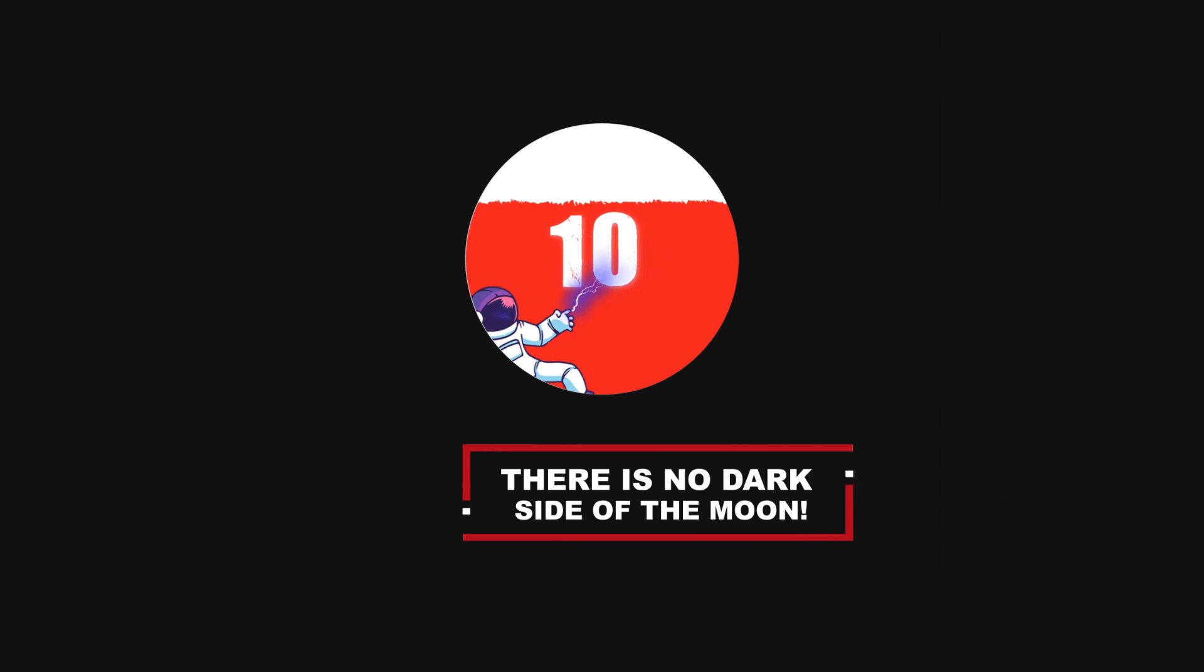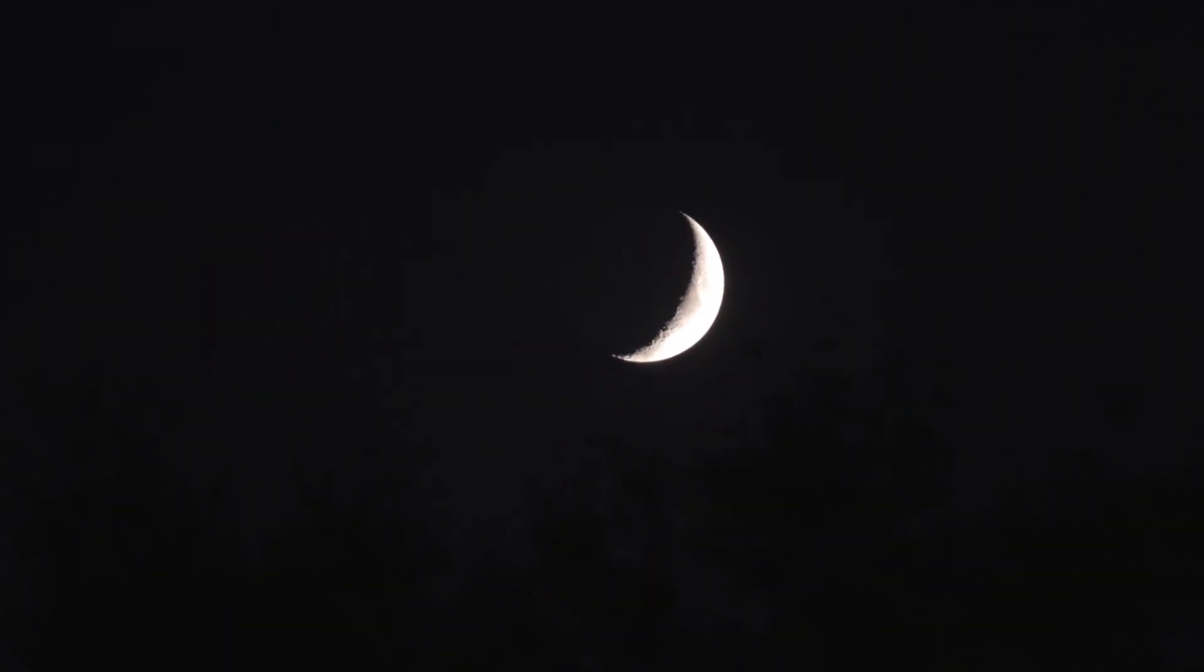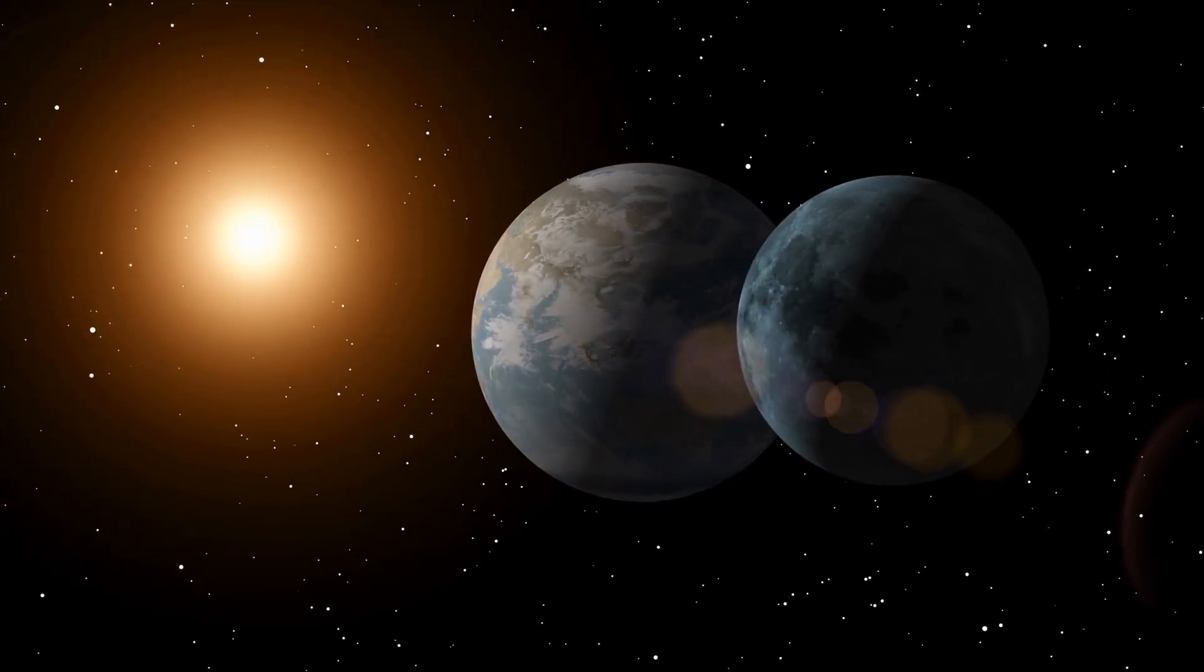Number 10: There is no dark side of the Moon. The misunderstanding about a permanent dark side probably comes about because only one side of the Moon is ever seen from Earth. Still, both sides of the Moon actually get the same amount of sunlight.